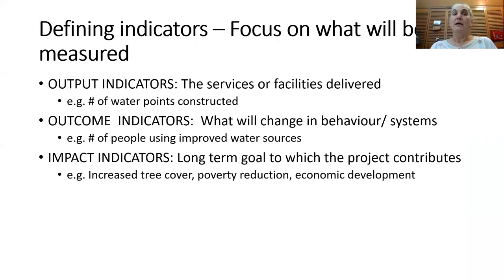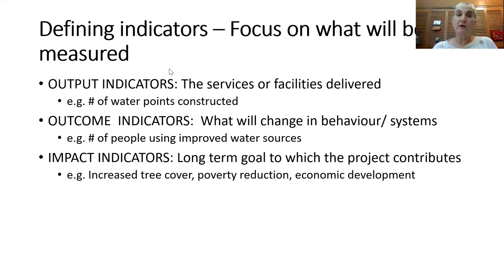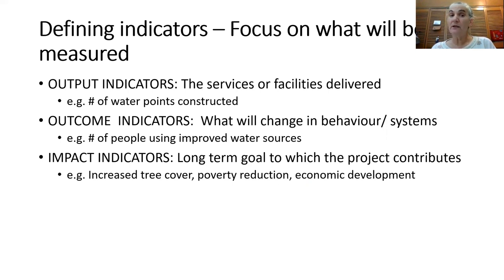In defining objectives, you need to focus on what can be measured. There are different kinds of indicators. There can be output indicators — for example, what are the results of the actions or activities you've undertaken in your project, such as the services or facilities that have been delivered, the number of people trained, or for example, the number of wells that have been dug.